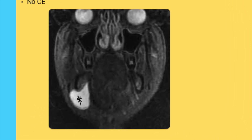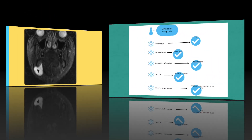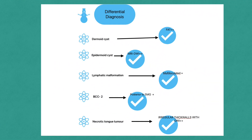The differential diagnoses of ranulas include dermoid cyst and epidermoid cyst. A dermoid cyst can be excluded by identifying a fatty component within it. For an epidermoid cyst, MRI will typically show diffusion restriction — a fluid intensity cyst with diffusion restriction is an epidermoid cyst, not a ranula.